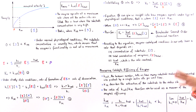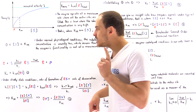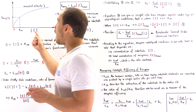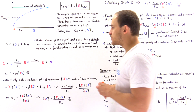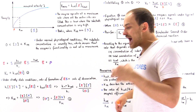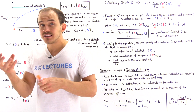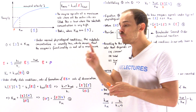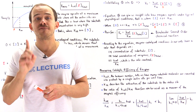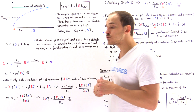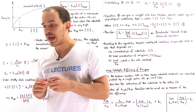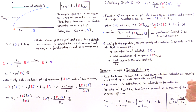Km has two meanings. One meaning is that it's the substrate concentration that gives a rate of Vmax divided by two. The other meaning is that Km describes how attracted the enzyme's active site is to the substrate. A very high Km value means the active site is not very likely to bind the substrate, while a low Km value means there will be very good binding between the substrate and that active site.